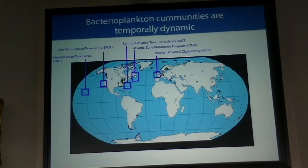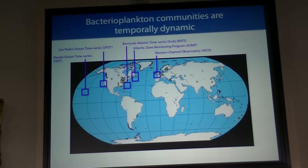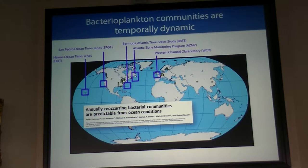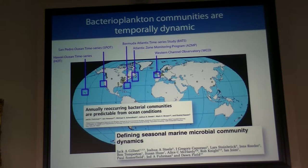Bacteria and planktonic communities are also dynamic in time. We have multiple long-term oceanographic time series running for multiple decades, where researchers using molecular approaches describe changes in community structure related to environmental conditions over time. A seminal 2006 paper by Jed Furman's group, titled 'Annually Reoccurring Bacterial Clades are Predictable from Ocean Conditions,' demonstrated a strong seasonal cycle to bacterioplankton communities over about a decade. A more recent paper from the Western English Channel also supports this idea of seasonal variation in microbial communities.